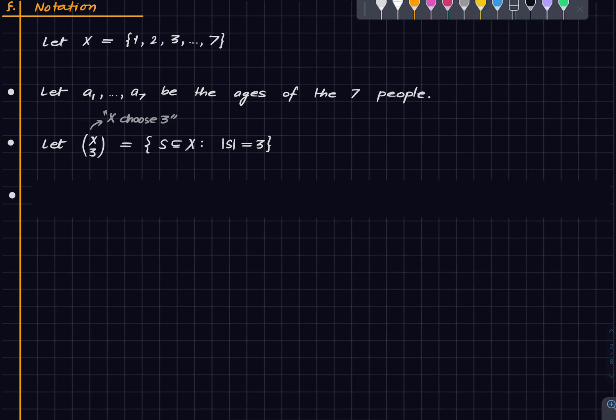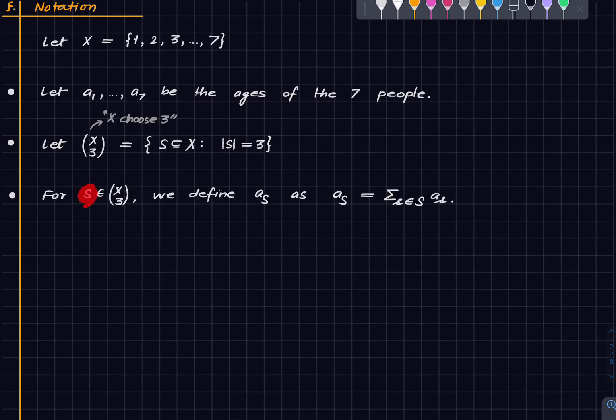Nothing very fancy going on. And lastly for any element s in x choose 3 we write a with a subscript the subset s to denote the sum of all the ages of the members in the subset s. Okay so these are some notations we will use.